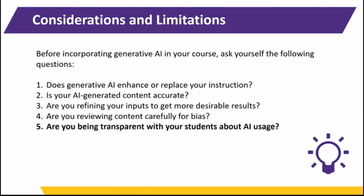Our fifth consideration is: are you being transparent with your students about AI usage? In much the same way that you would credit a human source when you present research, we recommend being transparent with your students about AI usage in your course. Think of this as a two-way street for transparency: be upfront with students about what content you've incorporated into the course using AI, and provide students with explicit guidelines for when AI usage is acceptable and when it's not. You might even consider having a set of AI usage policies in your syllabus. The important thing is to be specific, clear, and transparent.